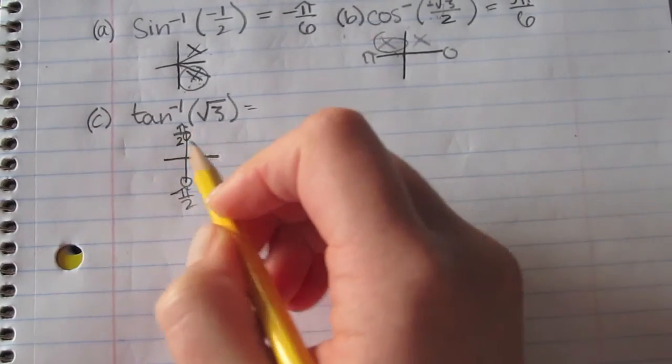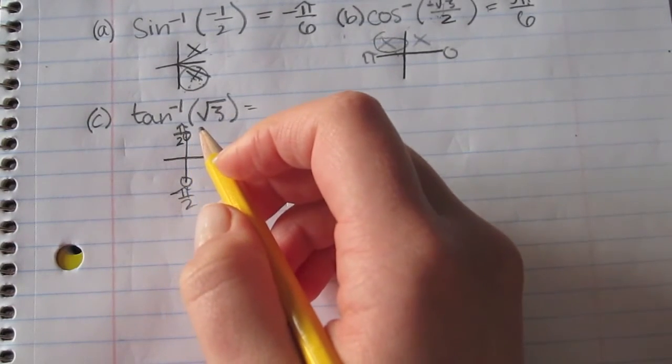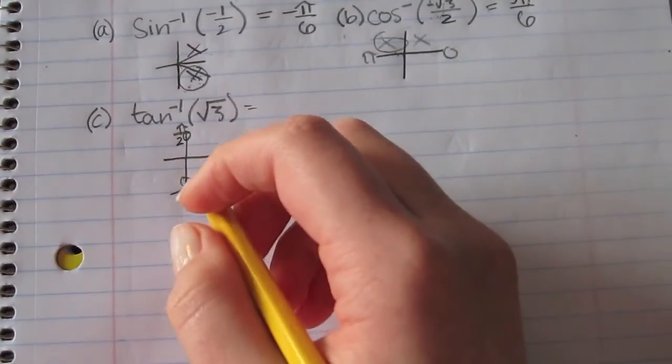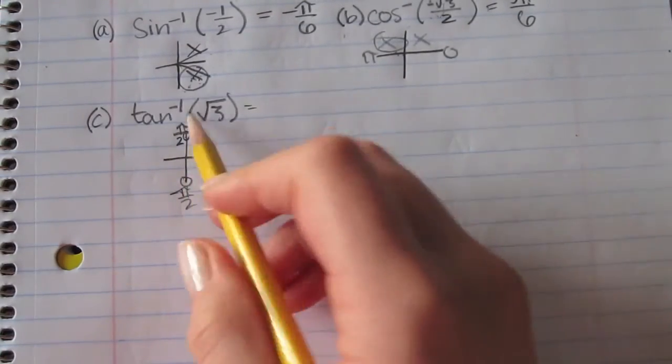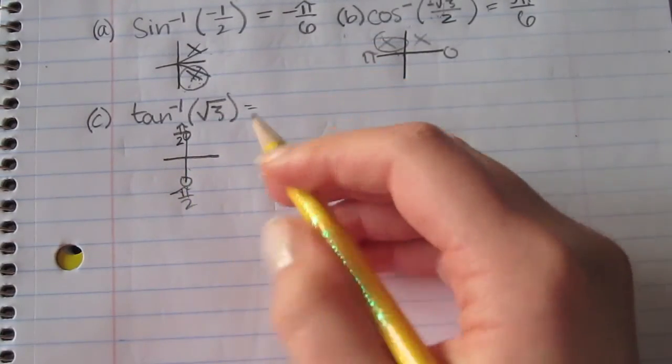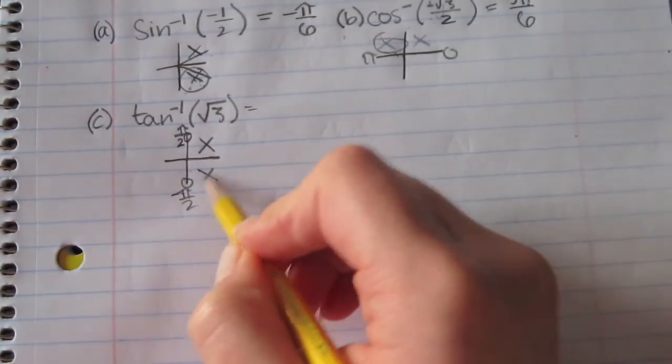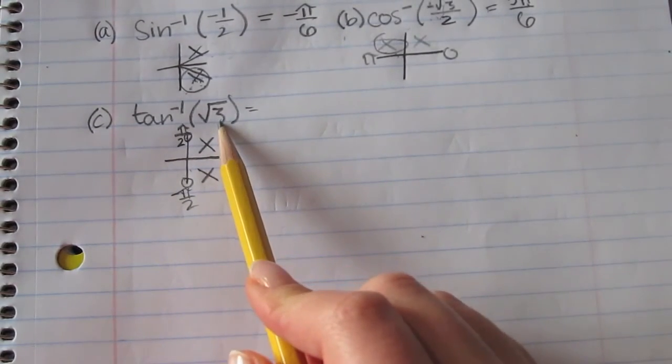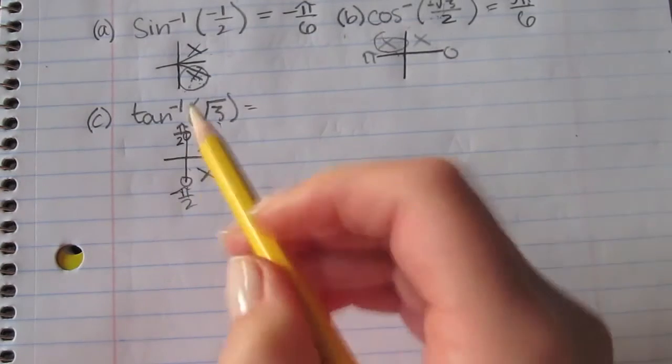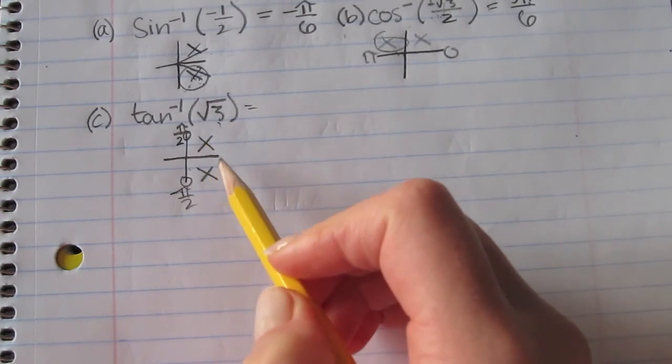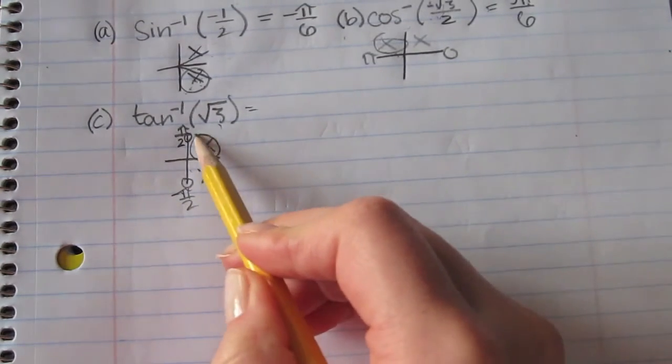We'll put those there because it can be those. That is positive, so we know that it is going to be in the first quadrant.